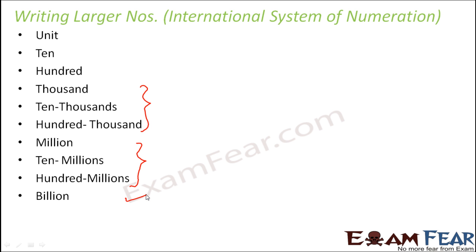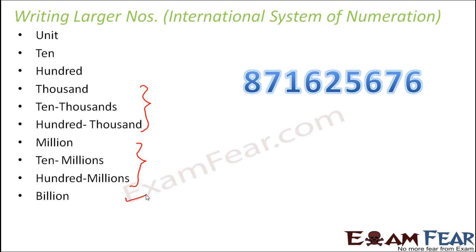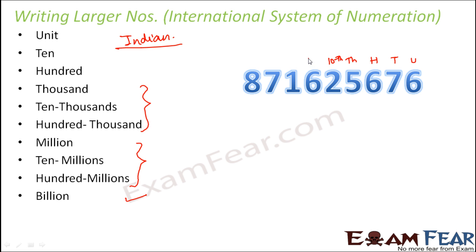Since these terminologies are different, the names of the numbers also change. Let's consider an example number and see what its name would be as per the Indian system and then as per the international system, for an apple-to-apple comparison. As per the Indian system, the positions are: units, tens, hundreds, thousands, ten thousands, lakhs, ten lakhs, crores, and ten crores.